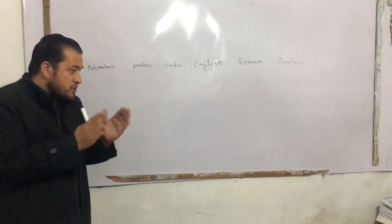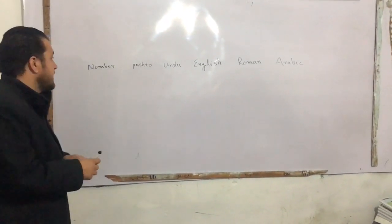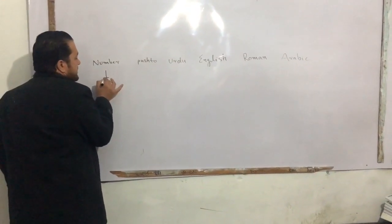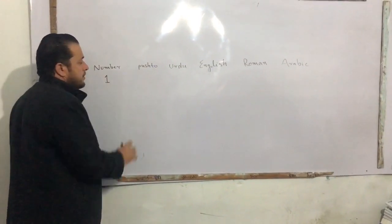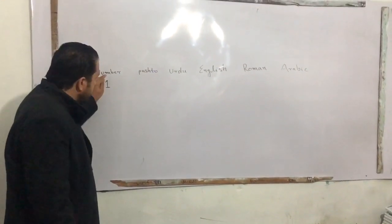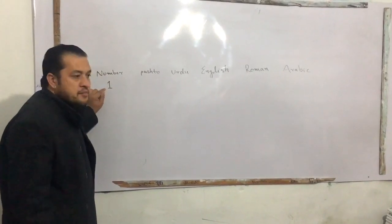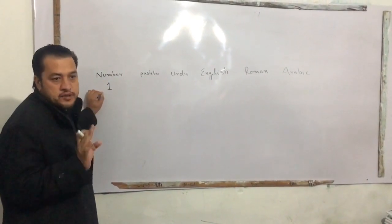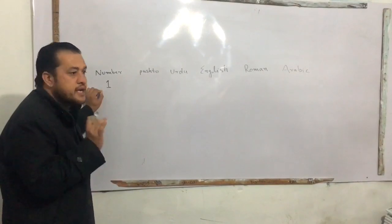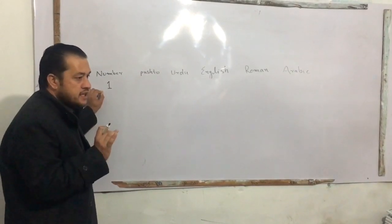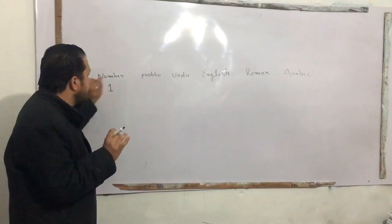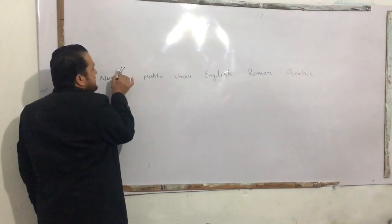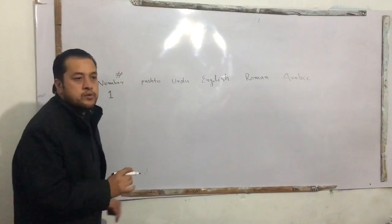My name is 1. We are reading the number in mathematics, and that number is 1. This is the number 1 in math. It is also written as age, sign.